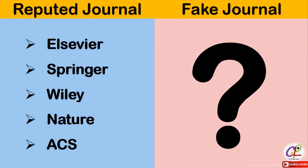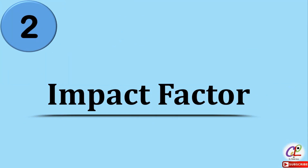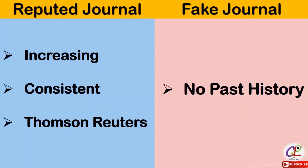Next is the impact factor. This is a very crucial journal metric which helps you identify the quality of the journal. The reputed journal will have an increasing or consistent impact factor. The other crucial parameter is that the reputed journal will have its impact factor measured according to the Thomson Reuters policy. While in case of a fake journal, it will not have any past history of impact factor, and suddenly the website will show a very high impact factor. So you need to be very careful from such kinds of journals.